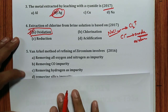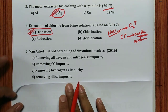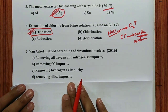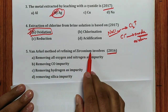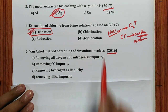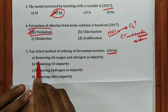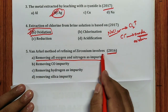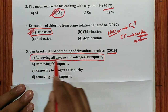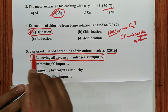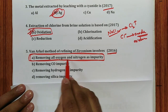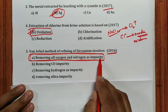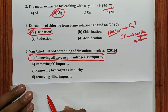Question 5 (2016): Van Arkel method of refining of zirconium involves — remember, this method removes oxygen and nitrogen as impurities. The answer is: removing all oxygen and nitrogen impurity.